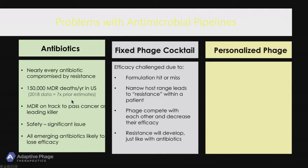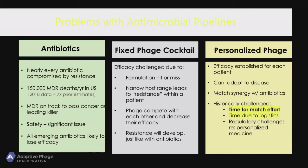The antibiotics, as we know, are running into a problem because of resistance. With fixed cocktails — as I pointed out yesterday with Tom Patterson, one of the first patients we used this phage collection on — there were 98 phages for the Acinetobacter baumannii he had, but only four of them worked. So what are the chances we would have put together a cocktail that worked if we limited it to just a few? With personalized phage, you can always find phage that'll work, especially if you have a large enough library.